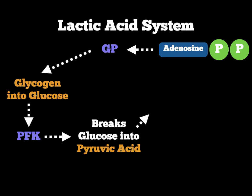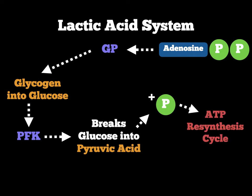When PFK partially breaks glucose into pyruvic acid, it creates phosphates for the ATP resynthesis cycle. Importantly, it doesn't just create one phosphate — it creates two phosphates by breaking glucose into pyruvic acid. So when you draw your diagram, make sure you write 'x2' by that phosphate, because two phosphates are gained through this cycle.